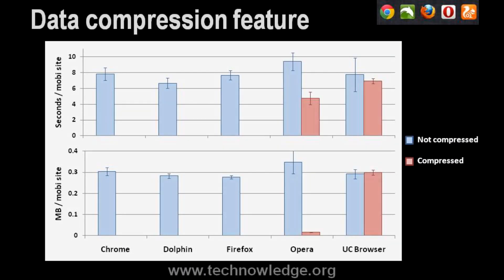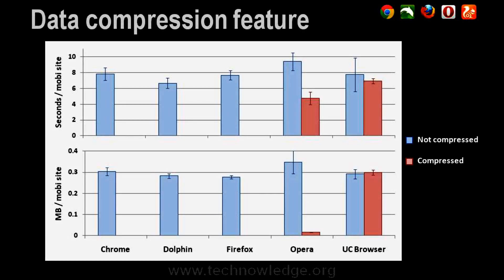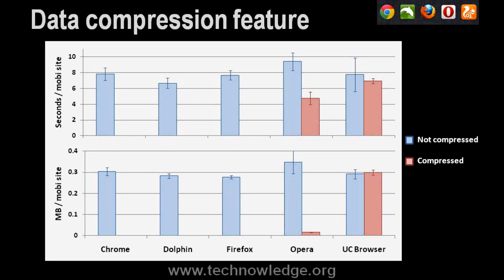The next slide shows the data compression feature, available only in Opera and UC Browser. For UC Browser, the megabytes per mobile site shows no meaningful difference — the compression feature doesn't actually do anything noticeable, maybe half a second difference in speed. Whereas for Opera, data usage with the compression feature on is about 5–10% of the uncompressed data, and download speed is about half the time. So for UC Browser, it's basically a useless feature. For Opera, it makes a real difference — you'll save a lot of data and get a faster browsing experience when not on Wi-Fi.